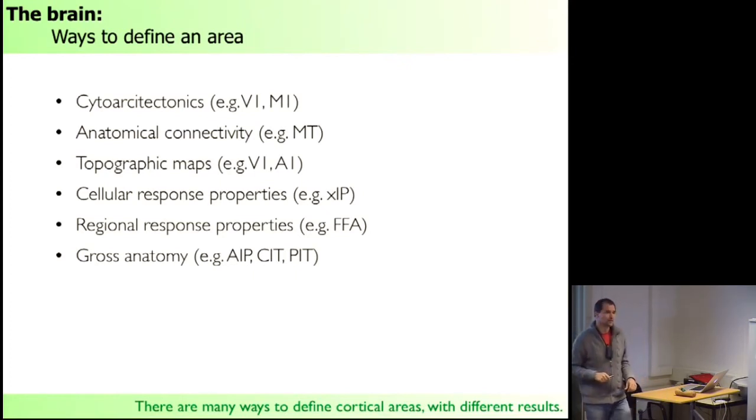Or in parietal cortex, there's a similar scheme in LIP, VIP, and so on, areas we will discuss as well. So neighboring neurons respond to the same type of stuff, like for example faces, objects, when you make the case, and so on.